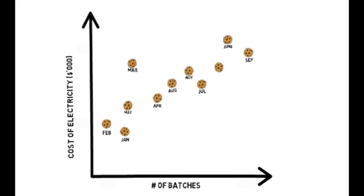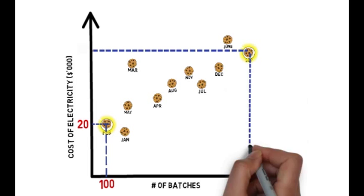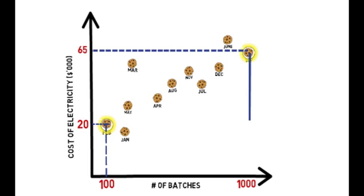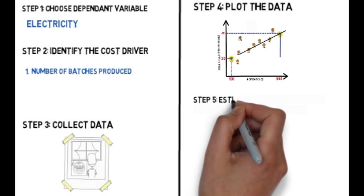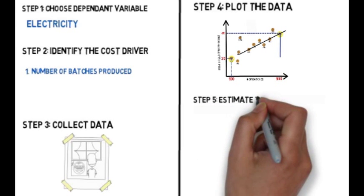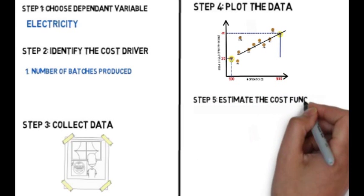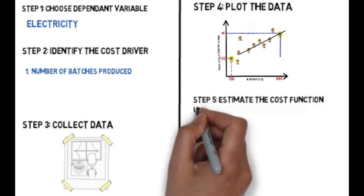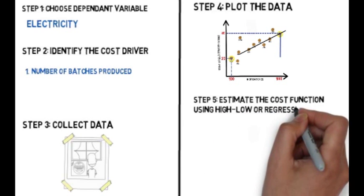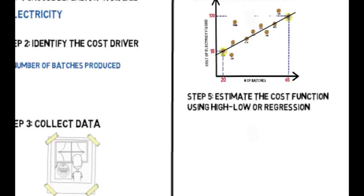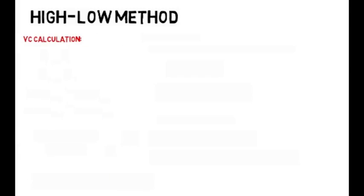Bob then estimates the cost function using the high-low method or regression analysis. He believes the driving factor is the number of machine hours and chooses this as the independent variable. The highest and lowest periods of activity are chosen, based on the x variable, and the y values are the corresponding costs for each of the selected periods.